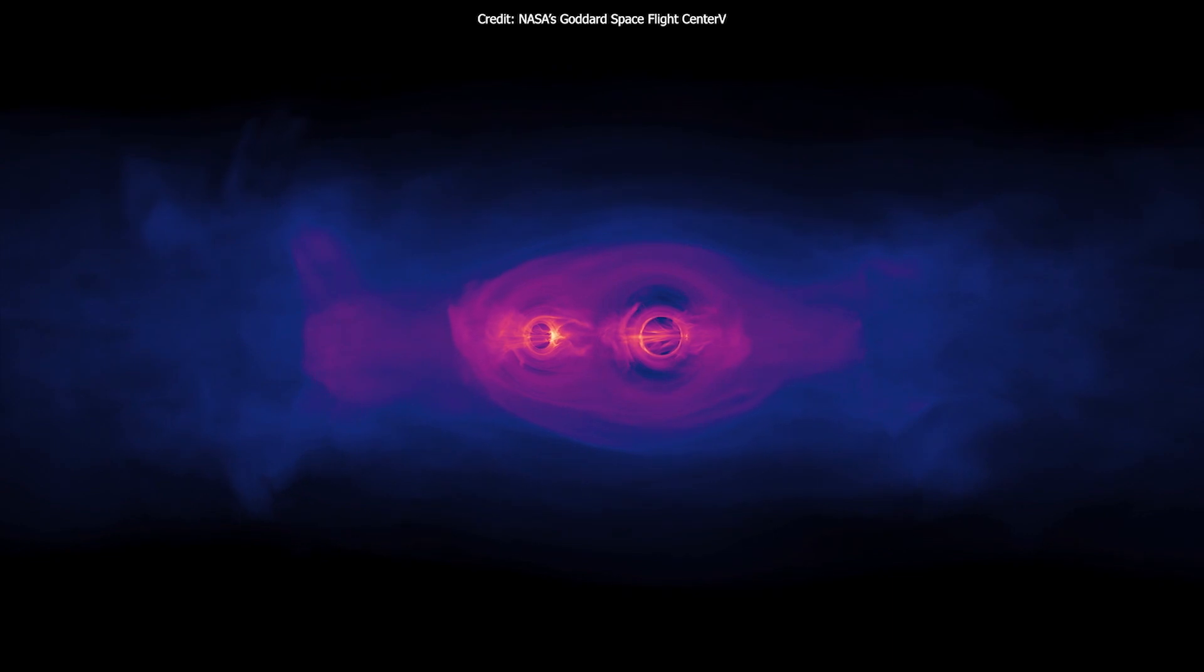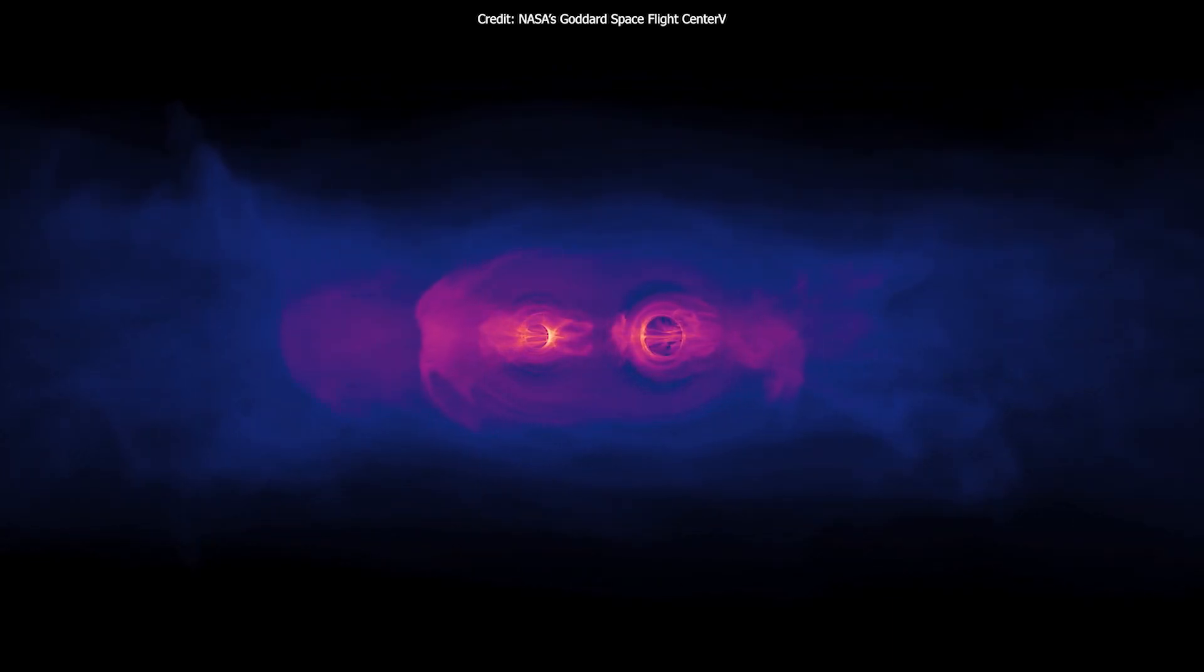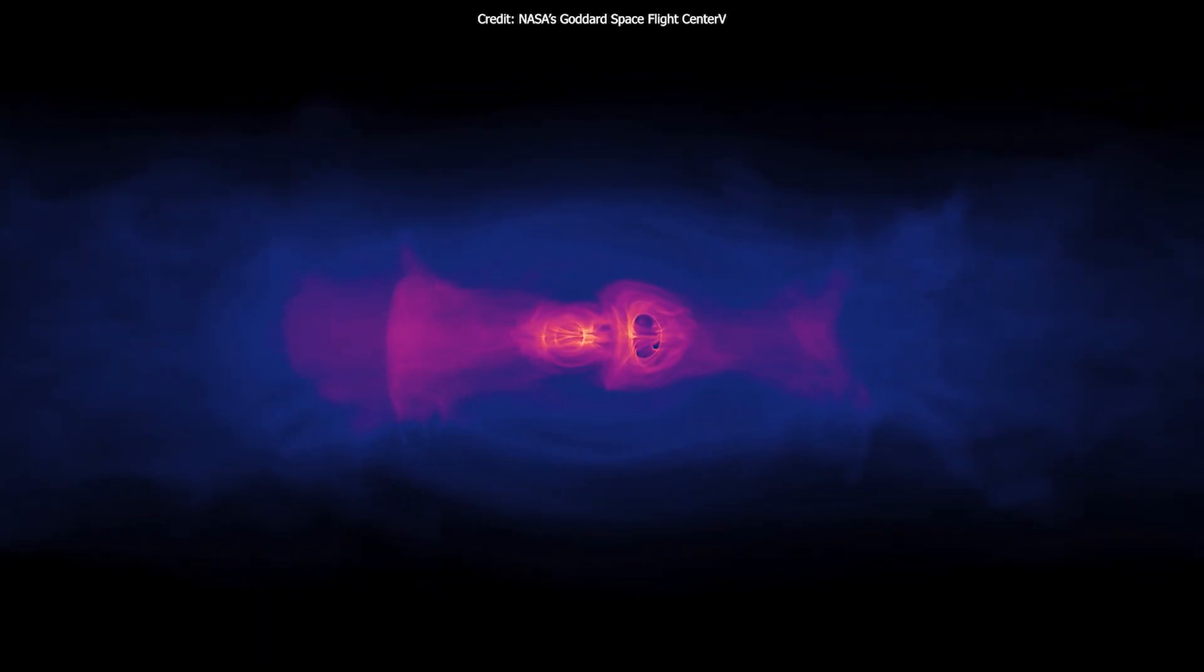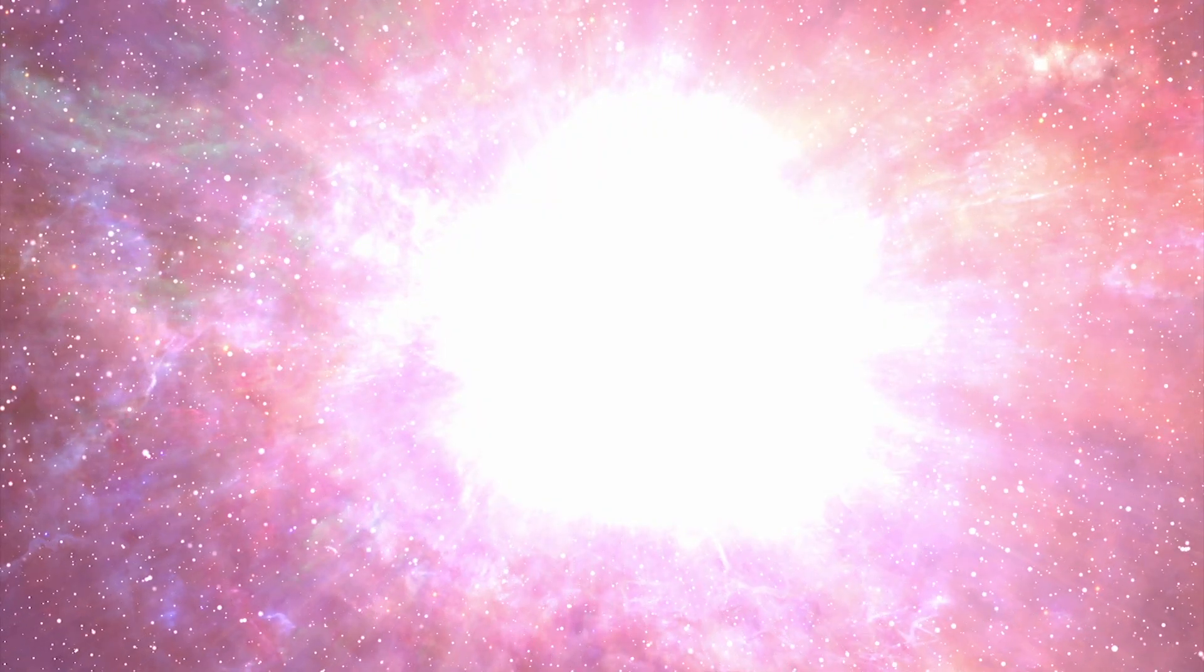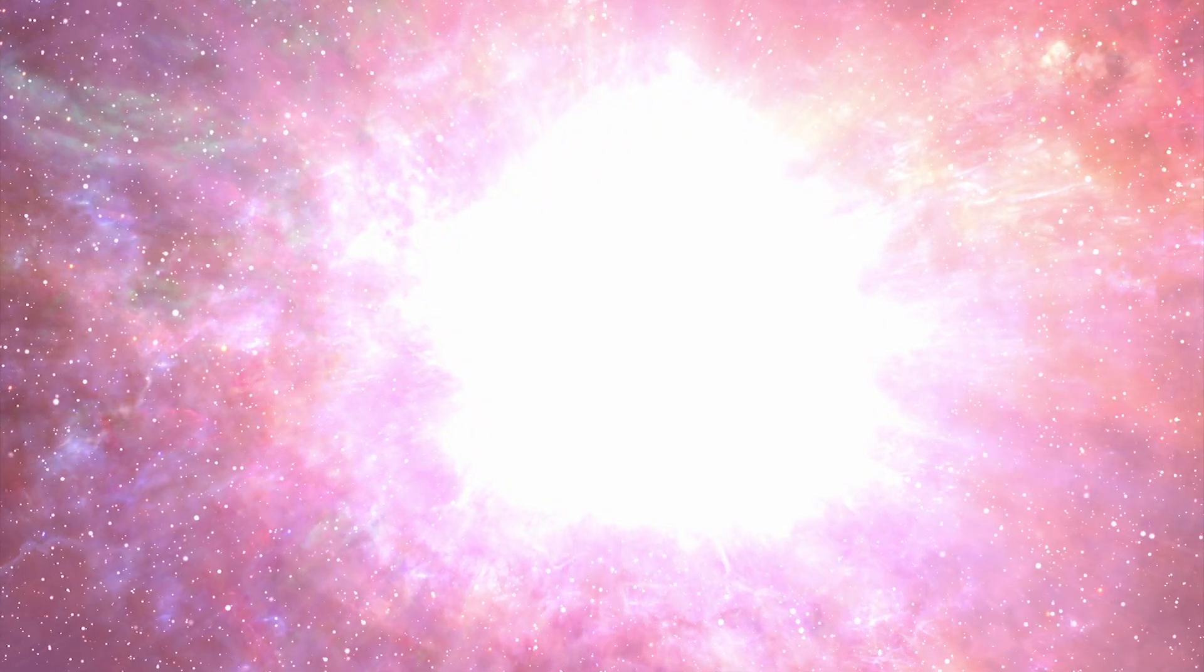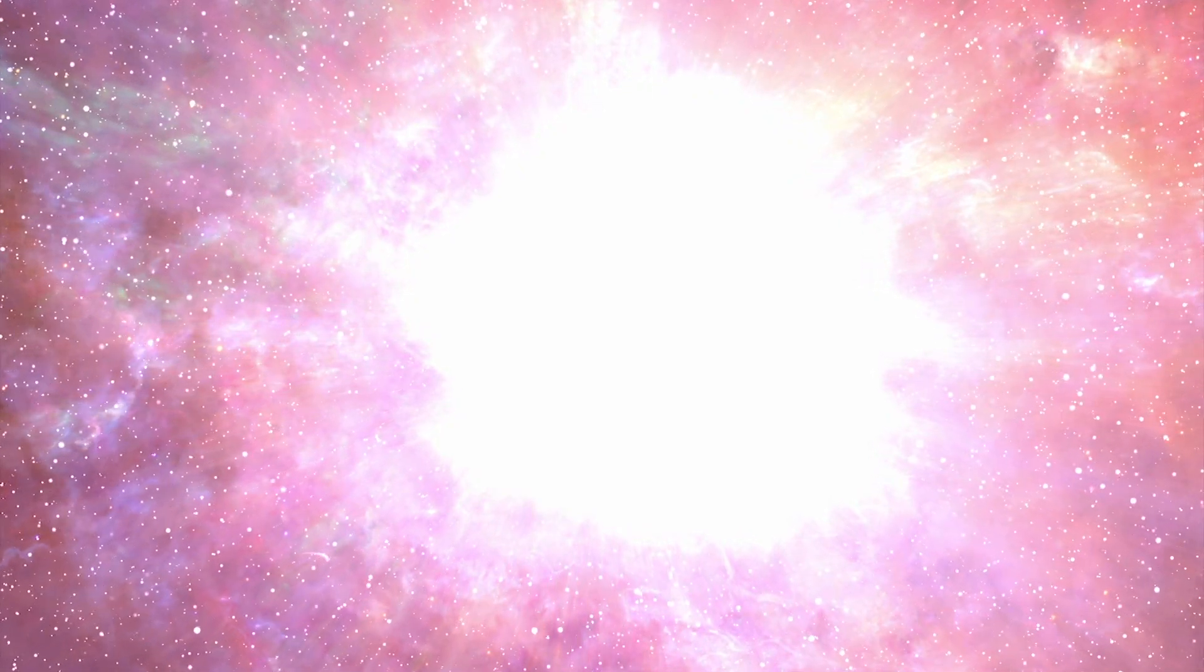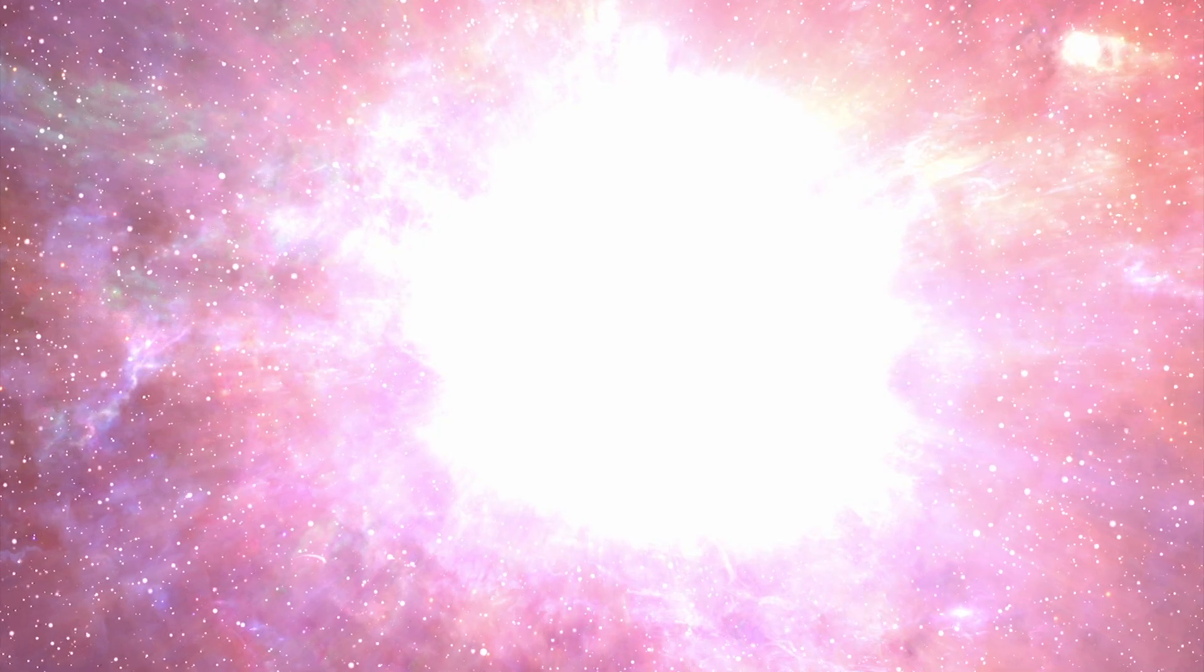One suggestion is that the larger object was created by a previous black hole merger rather than a collapsing star. The new heavy black hole merger happened when the universe was only about 7 billion years old, roughly half its present age.